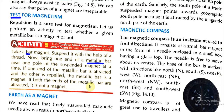If both the ends of the metallic bar are attracted, it is not a magnet. But if one end attracts and one end repels, we can say that it is a magnet. Like poles repel and unlike poles show attraction. So if you have a suspended bar magnet and both sides attract, it is not a magnet.